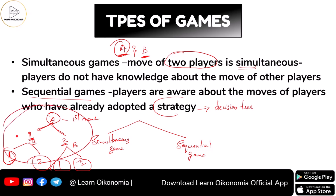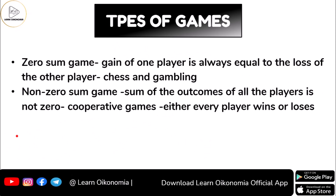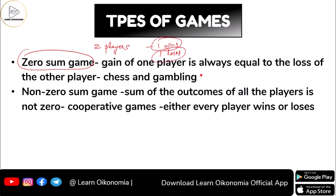The next type of game is the zero-sum game and the non-zero-sum game. In a zero-sum game, if two players are playing and one player wins while the other loses, the gain of one player is exactly equal to the loss of the other player. This is something you can see in chess or gambling.